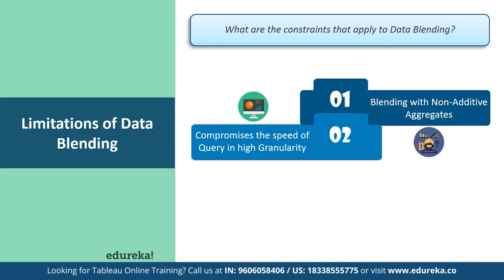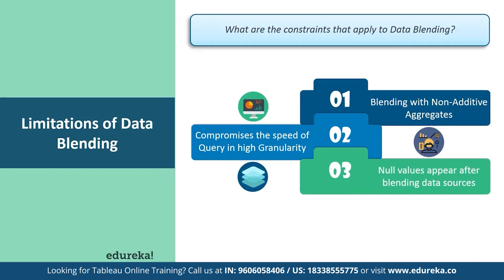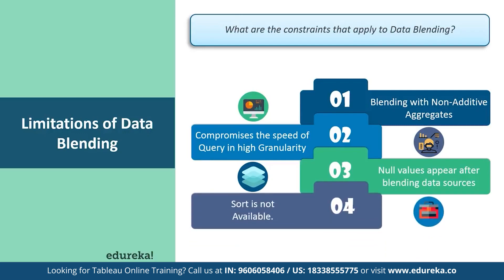Second, null values can sometimes appear in place of the data you want in the view when using data blending. This happens because the second data source may not contain values corresponding to the primary data source, the data types of the fields being blended are on different levels of detail, or the values in the primary and secondary data sources use different casing. And finally, sorting by fields is unavailable for data blended measures. But despite that, data blending is a whole new approach to merging your data — it saves time, makes your system more efficient, and optimizes the data cycle as a whole.